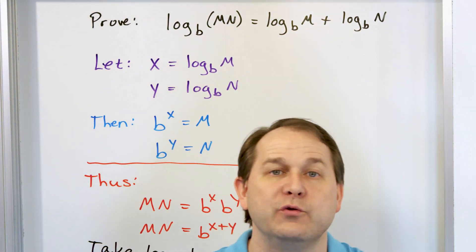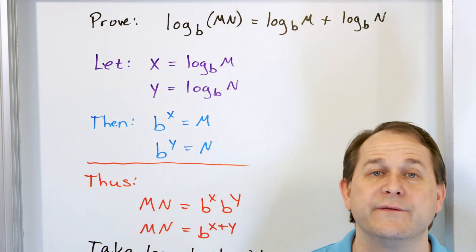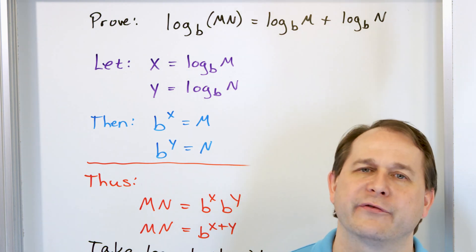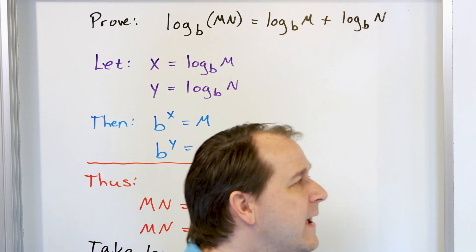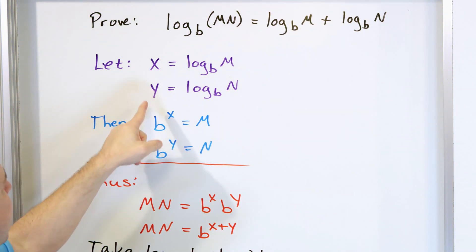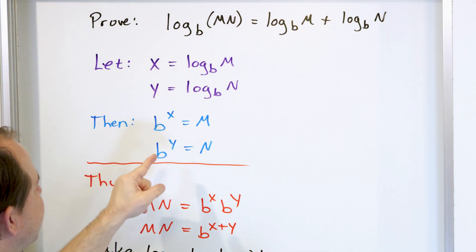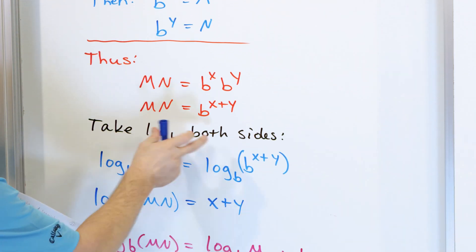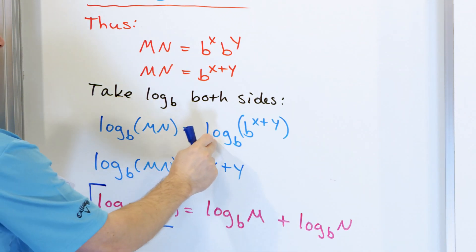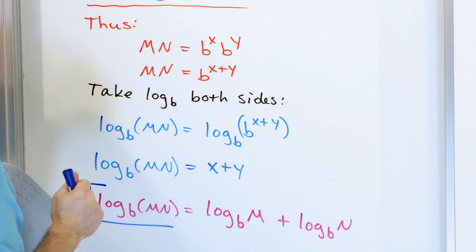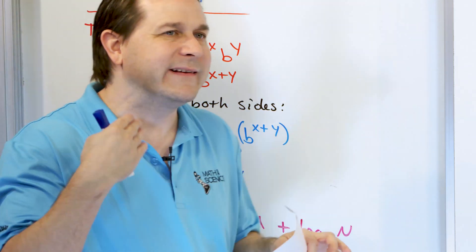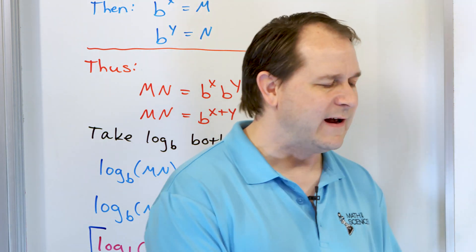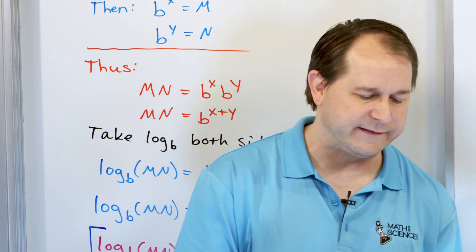Do I expect that you would have known how to do that? No. Most teachers are not going to tell you to prove the first law of logarithms. But it allows you to understand how to get this from the definition. When you multiply and take the log of both sides, the annihilation that happens is a property of logarithms. In the process of learning how to prove these things, you actually sharpen your skills with dealing with logs.